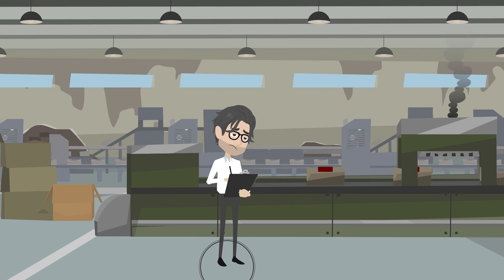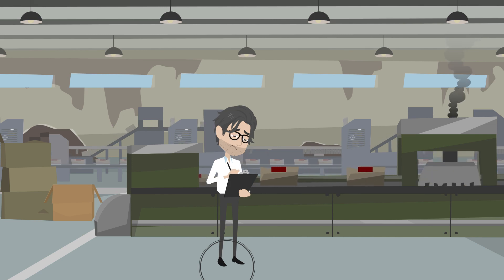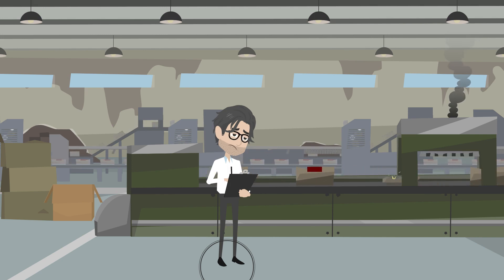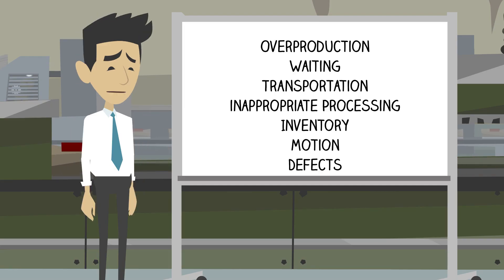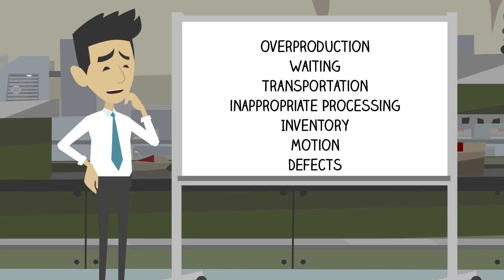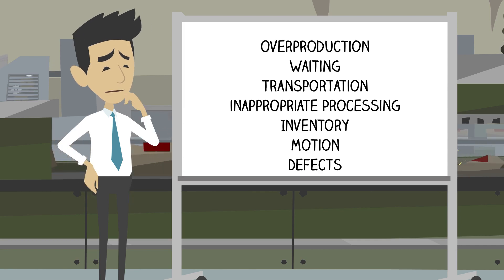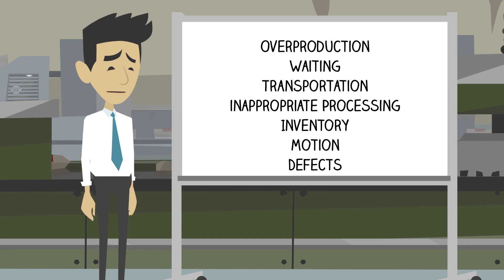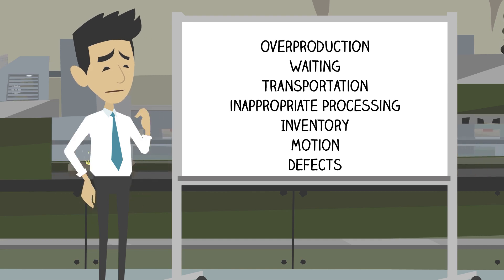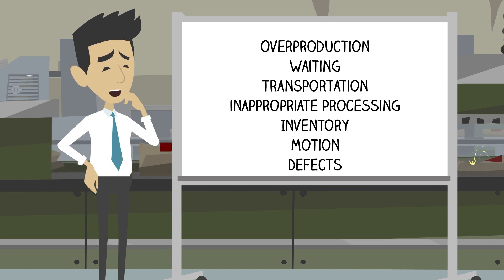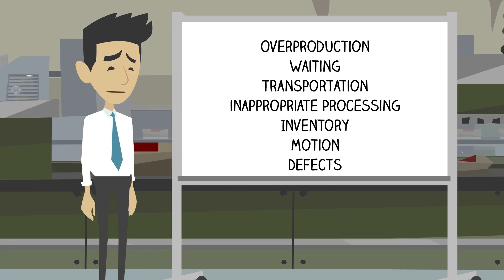The wastes Ono identified were overproduction, waiting, transporting, inappropriate processing, excess inventory or storage, unnecessary or excess motion, and defects. Let's examine each of these wastes in some more detail.